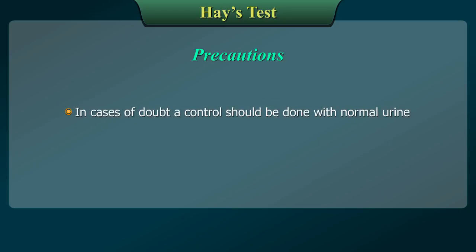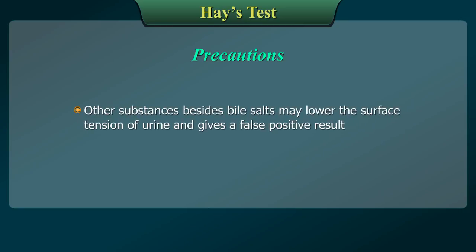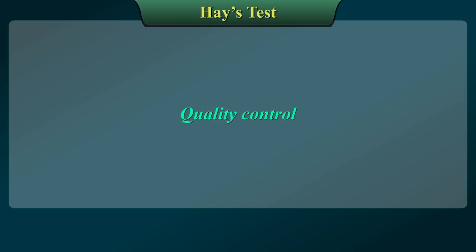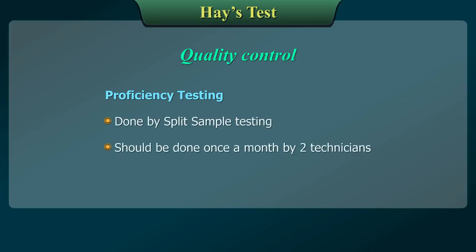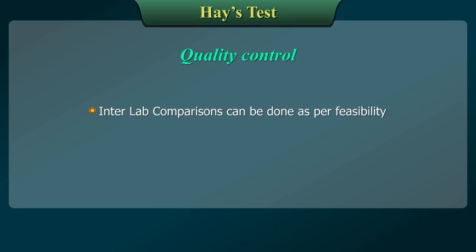In cases of doubt, a control should be done with normal urine. Quality Control: Proficiency testing can be done by split sample testing once a month by two technicians. Interlab comparisons can be done as per feasibility.